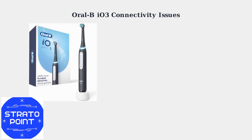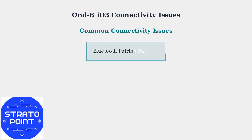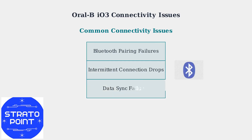The Oral-B IO3 electric toothbrush is a popular smart oral care device, but many users experience connectivity issues when trying to connect it to the Oral-B app. The most common problems include Bluetooth pairing failures during initial setup, intermittent connection drops during brushing sessions, and sync failures that prevent data transfer to the app.